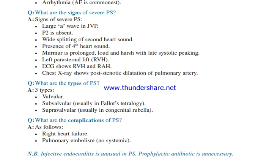Chest X-ray shows post-stenotic dilatation of the pulmonary artery. What are the types of pulmonary stenosis? Three types: valvular; sub-valvular, usually in Fallot's tetralogy; and supra-valvular, usually in congenital rubella.